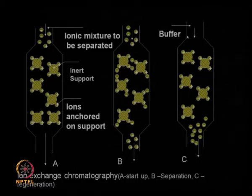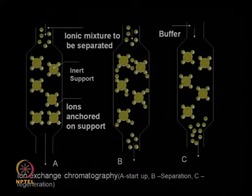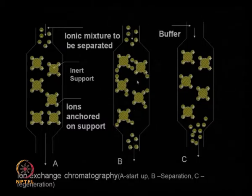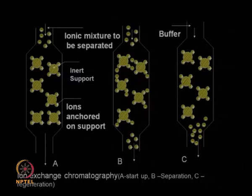Once you have done the separation, you can change the buffer conditions — like the salt concentration or the pH — so that whatever negative ions are bound will come out. This is one way of separating positive and negative ions. If you have both cations and anions anchored to the support, we can remove the entire salt from a mixture. For example, when using a salt for salting out of protein, ion exchange chromatography containing both cations and anions could be one way of removing the salts first.